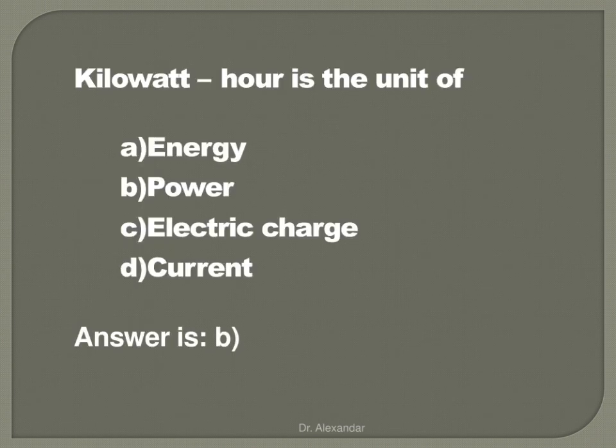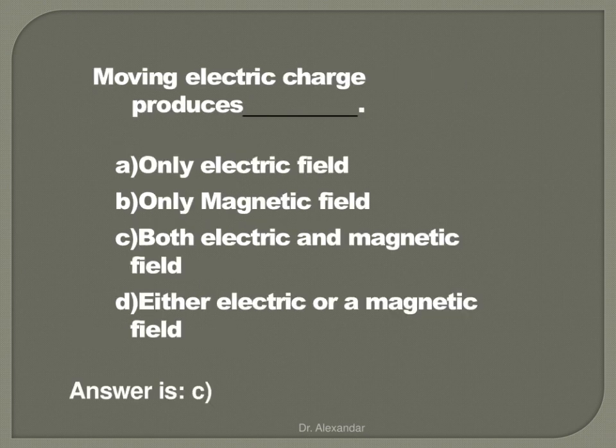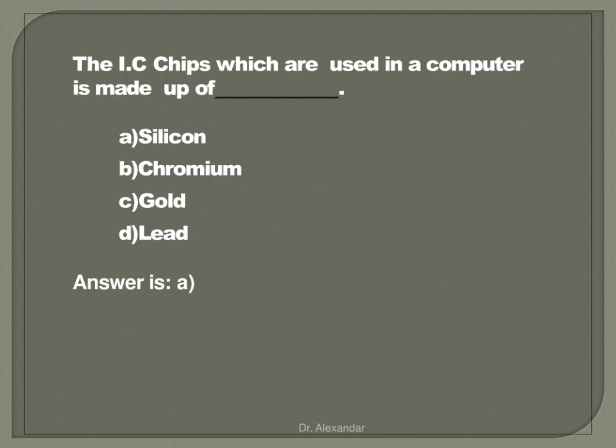Kilowatt hour is the unit of power. Moving electric charge produces both electric and magnetic fields. The IC chip used in computers is made up of silicon.